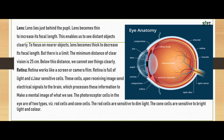Now, the retina. The retina works as a screen or camera film. It is full of light and color sensitive cells. These cells, upon receiving an image, send electrical signals to the brain, which processes this information to make a mental image of what we see. The photoreceptor cells in the eye are of two types: rod cells and cone cells. Rod cells are sensitive to dim light, while cone cells are sensitive to bright light and color.